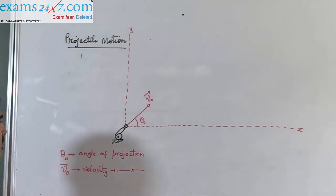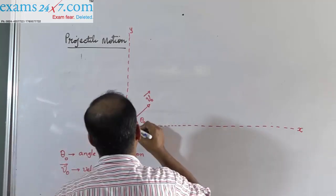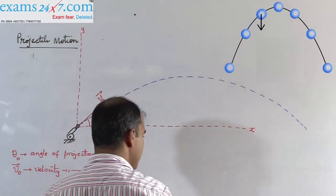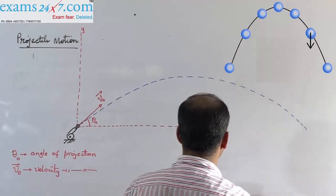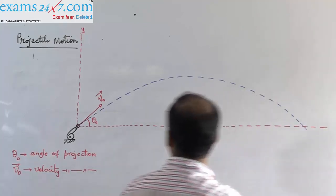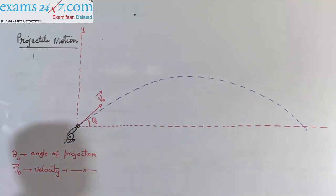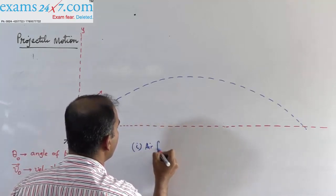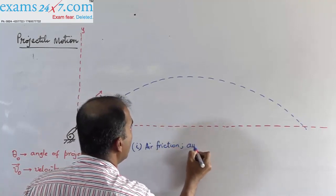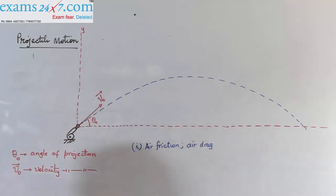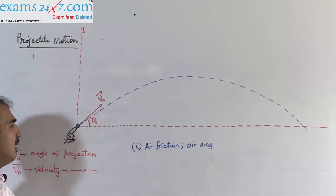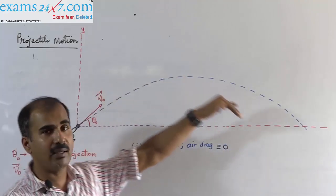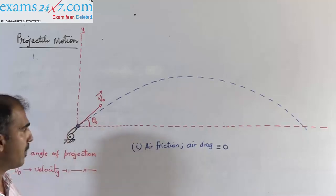Once the projectile is launched — in this case the shell is fired — we all know by experience that the shell is going to travel along a curved path. We will make certain assumptions. One is that air friction or air drag on the object — in this case the shell, or in general a projectile — is zero. So there is no air drag; it is moving as if inside a vacuum chamber with no air friction.